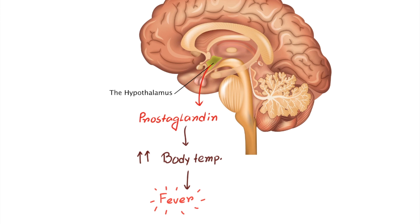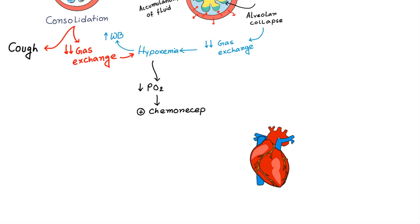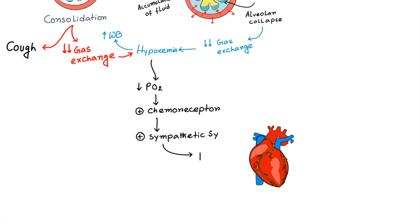Now, low partial pressure of oxygen can stimulate the chemoreceptors. And chemoreceptors will stimulate the sympathetic system. As you have low oxygen in your blood, heart will try to pump more and more blood to meet the oxygen demand. So, heart rate will increase. Along with that, there will be increased respiratory rate as our body will try to inhale more oxygen and exhale more carbon dioxide. So, in that patient, you can see increased heart rate and increased respiratory rate.